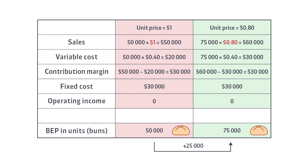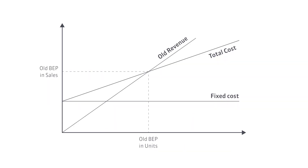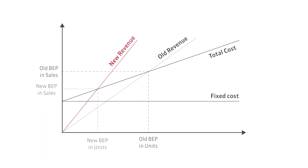As you can see, after lowering the unit price, the bakery has to sell 25,000 more buns to reach the breakeven point. However, when the unit price is greater, the situation will be completely different — the breakeven point will be achieved faster by selling fewer units.